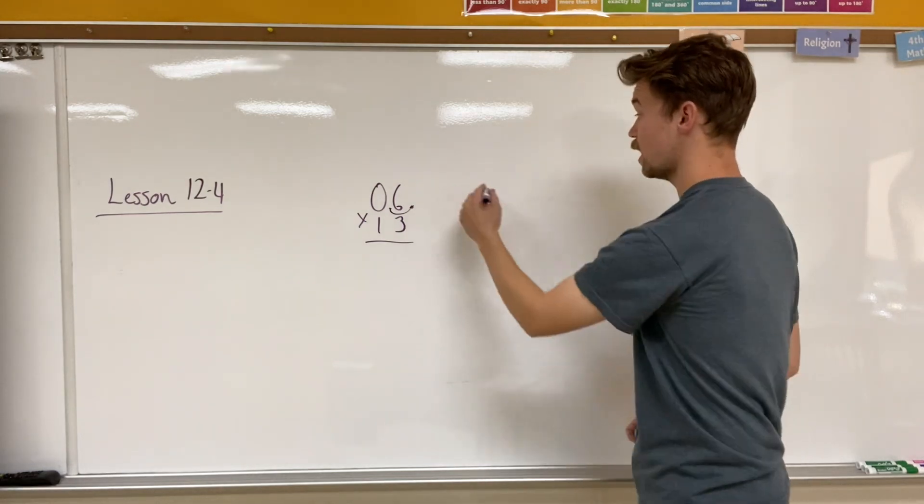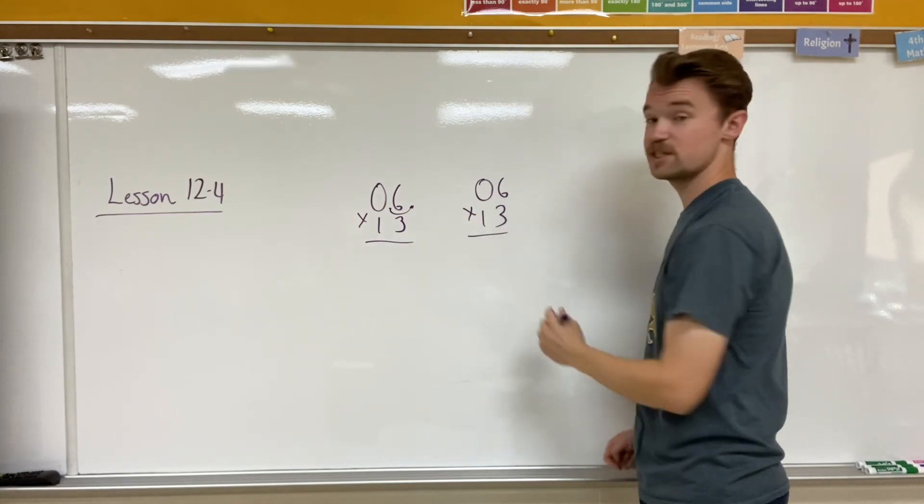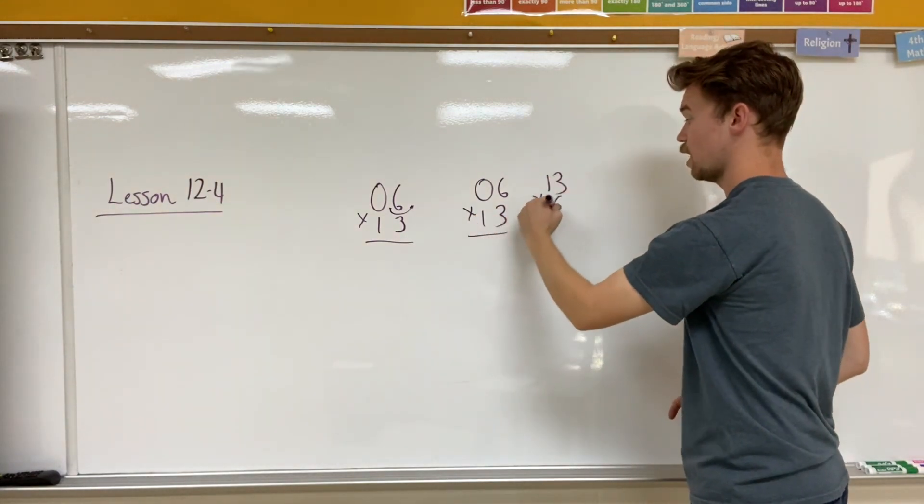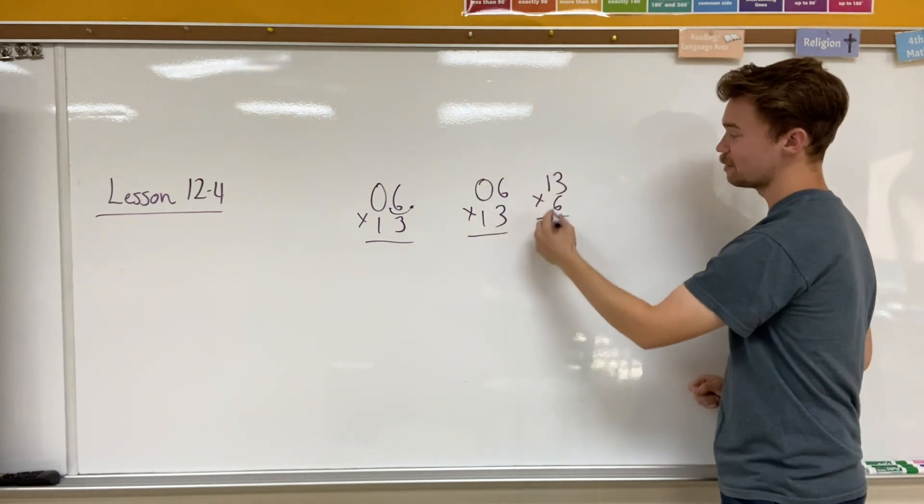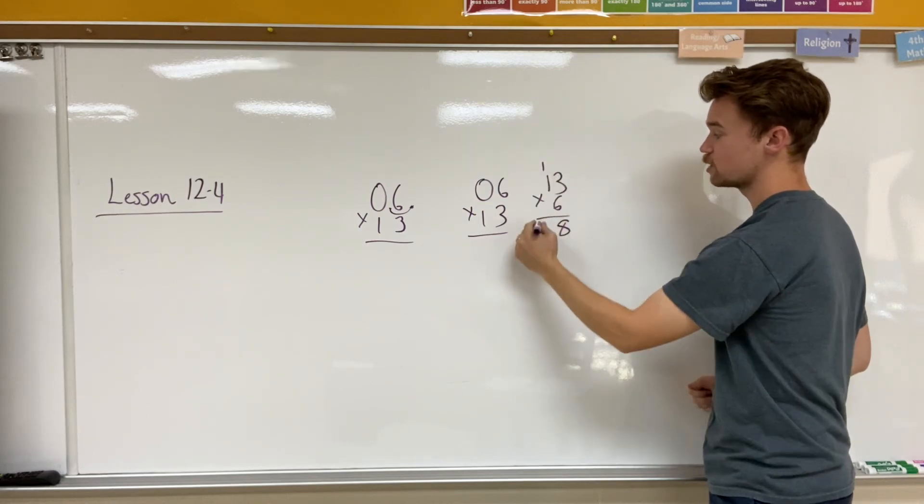So now I basically have 6 times 13, or I could flip it around and say 13 times 6 and make it a little bit more simple. That's something that we know how to do. 6 times 3 is 18. Carry the 1. 6 times 1 is 6 plus 1 is 7.